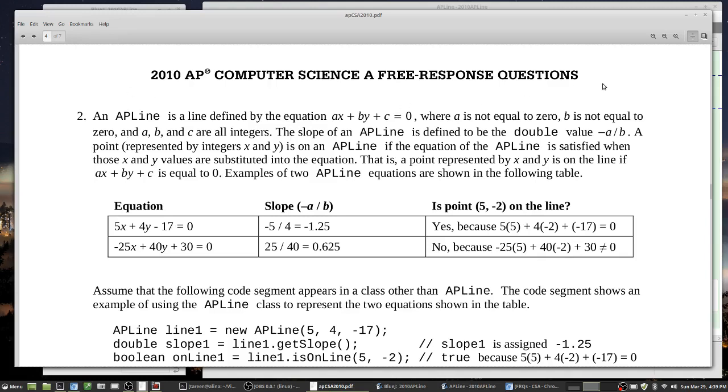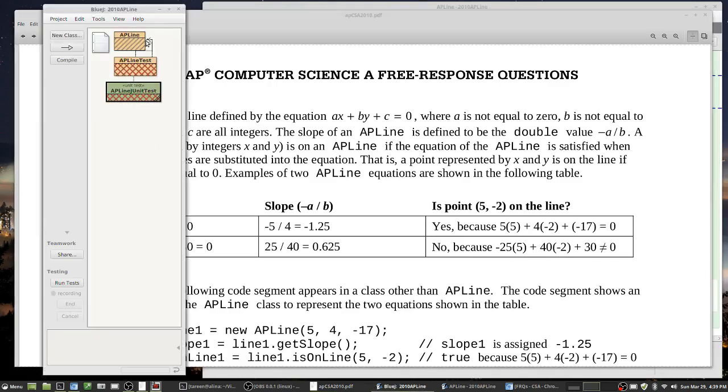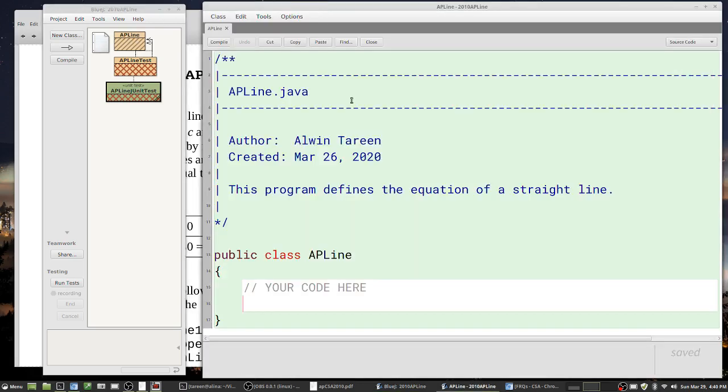When you unzip that APLine zip file, you're going to get a BlueJ project folder that looks like this. We're going to open up this APLine file, so you're going to get APLine dot Java right here, and now I have to go in and just write the code for this.